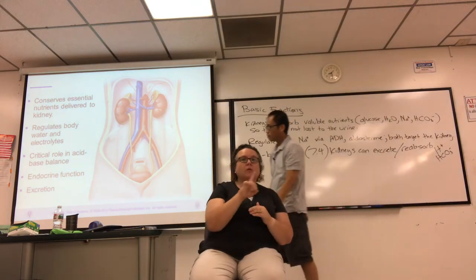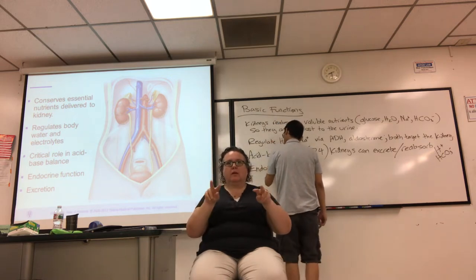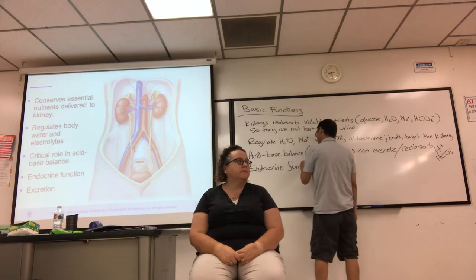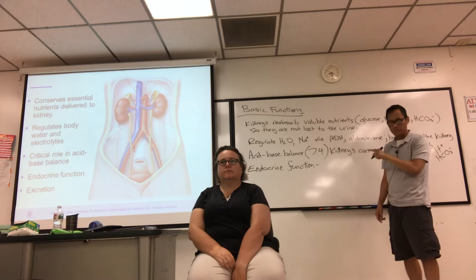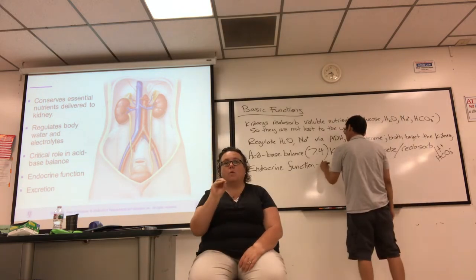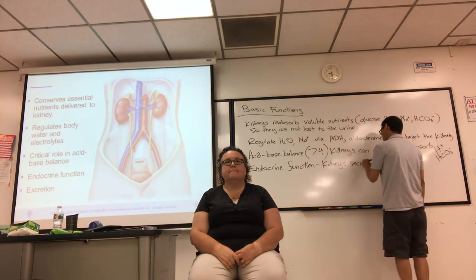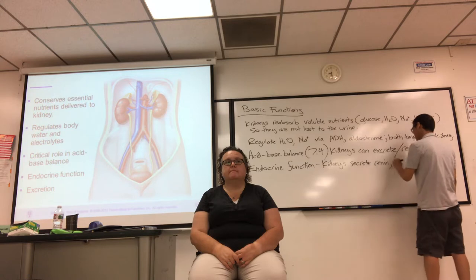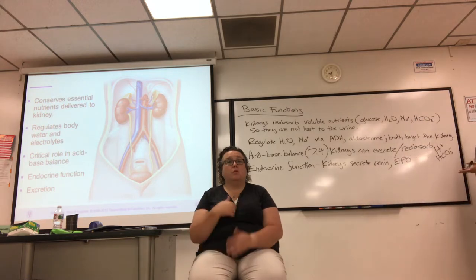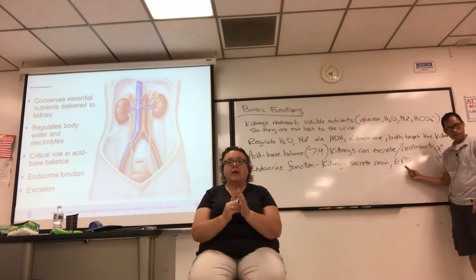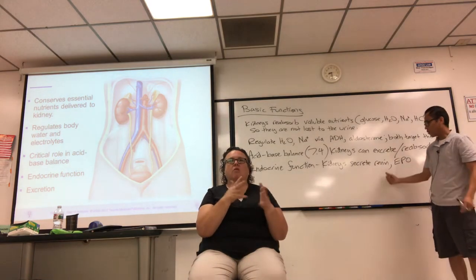The endocrine function — that is renin and EPO. We talked about those; they're coming up again. EPO increases your hematocrit — talked about that. Renin, the whole RAS mechanism — it was on two tests already and will be on a third test.